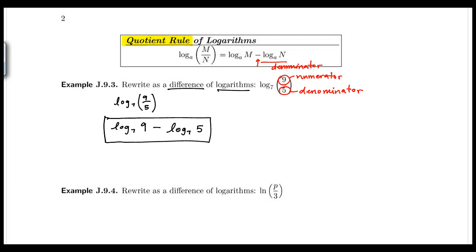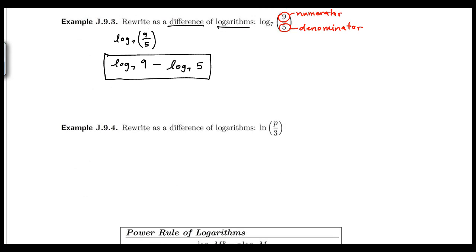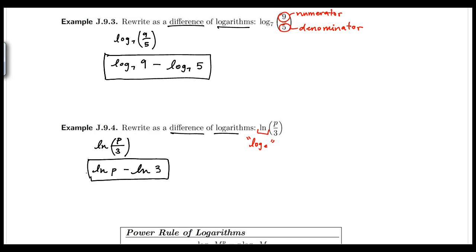Using natural logarithm again — recall natural log is just log base e, written as ln. If we have natural log of p over 3, then p is the numerator and 3 is the denominator. To rewrite as a difference of logs: natural log of p minus natural log of 3. Just because it says ln instead of log, they're both logs — natural log is simply log base e — and the properties always remain the same.